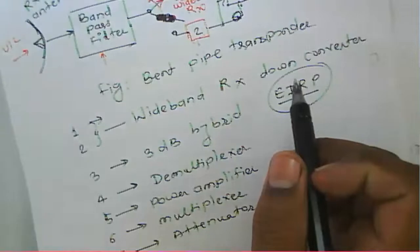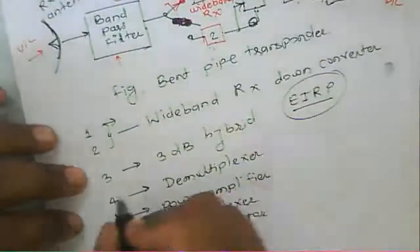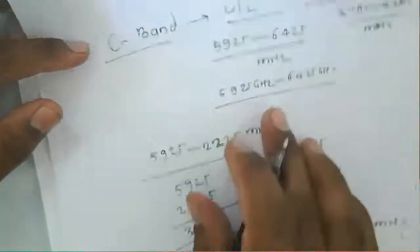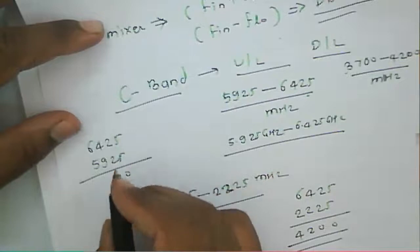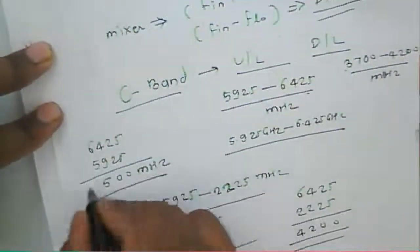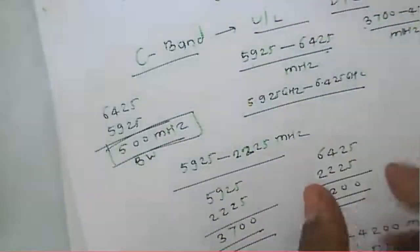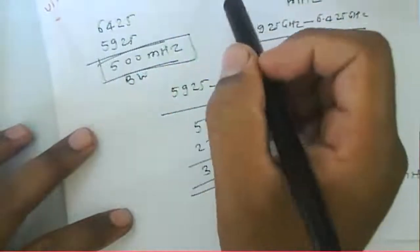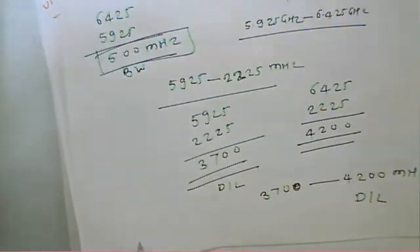For the C-band, the operating uplink band is 5925 to 6425 MHz, giving a total bandwidth of 500 MHz. This full bandwidth of 500 MHz is utilized by the satellite transponder operating in the C-band. Based on this bandwidth, we can determine how many channels or applications are supported by this particular transponder.